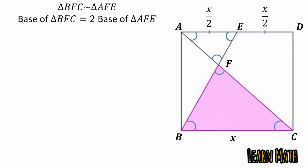Base of triangle BFC is equal to two times the base of triangle AFE. These two triangles are similar, so we can say that height of the triangle BFC is equal to two times height of the triangle AFE. If height of the triangle AFE is one, then height of the triangle BFC is two.